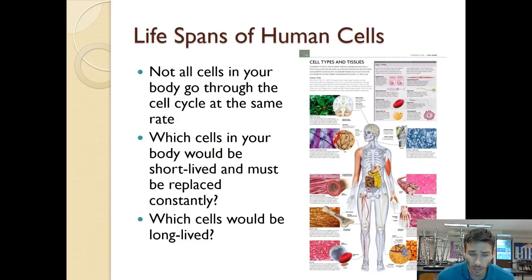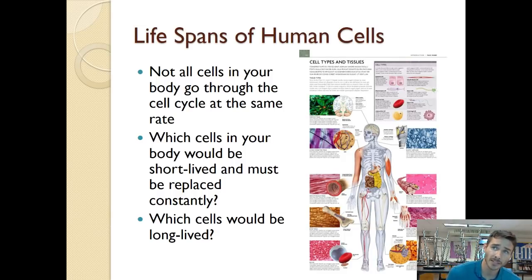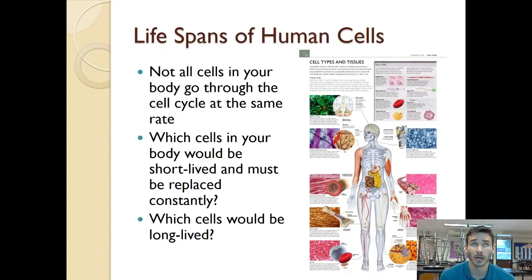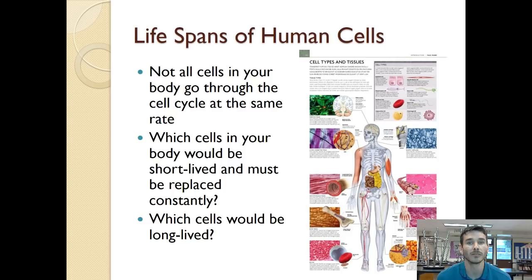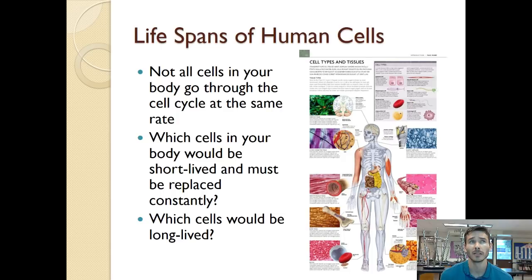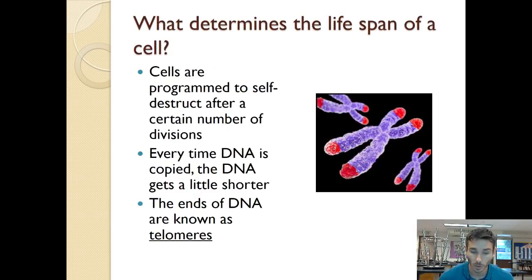In human cells, not all cells go through the cell cycle at the same rate. Some divide faster, some divide slower, and some actually don't divide at all — it depends on the type of cell. Think about which cells in your body would need to divide a lot versus which cells can live long and don't need frequent replacement. Consider where cells are short-lived and need to be replaced, versus where they live for a long time.